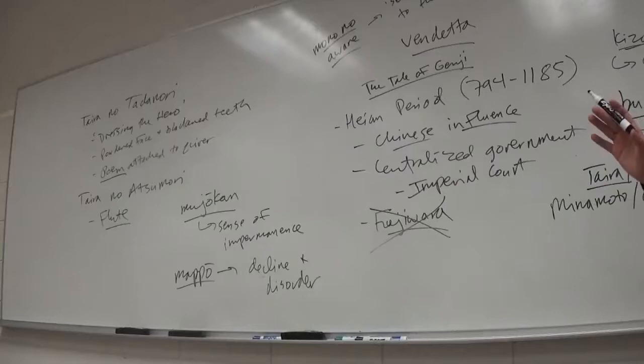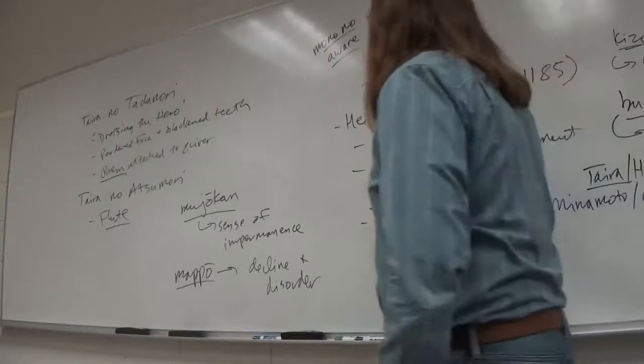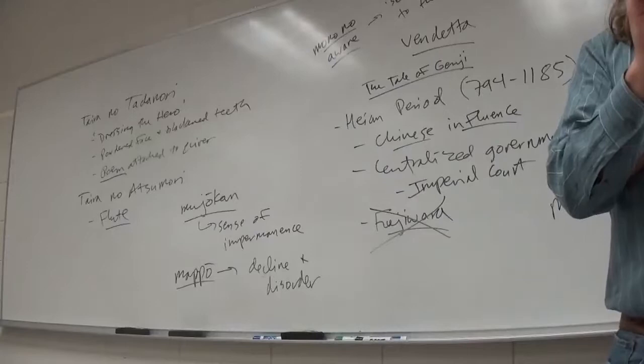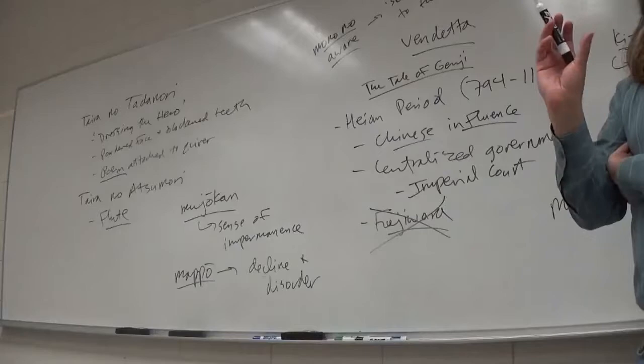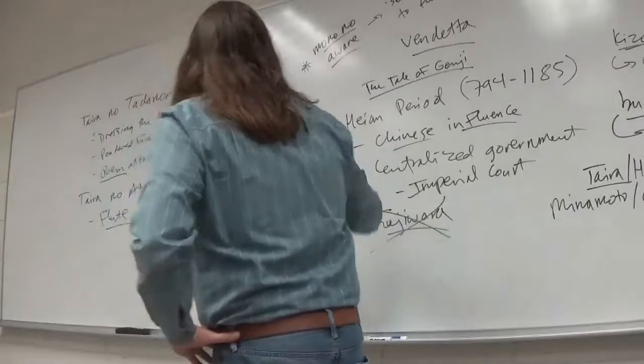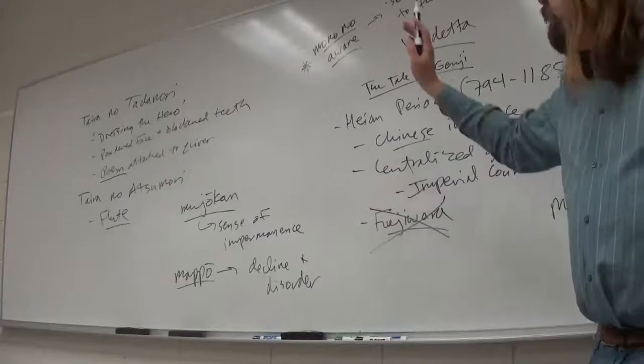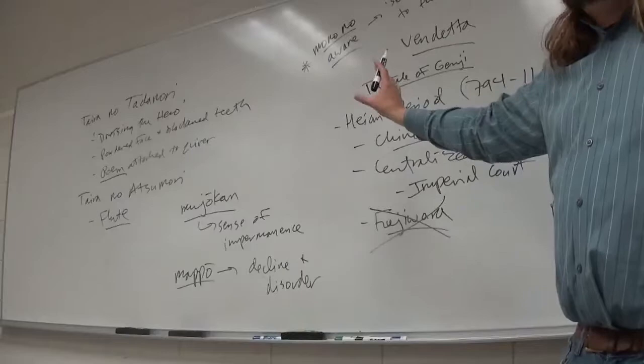Secondly, an idea that's associated particularly with Pure Land Buddhism called Mappo. Mappo means decline and disorder. The state of the world as described in the tales of the Heike is one of Mappo. It's the Taira who allowed things to get to this state, and the Minamoto who are supposed to be putting things back together. But it's still clear that even these unrefined warriors maintain some sense of this old mono no aware, this sensitivity to beauty.